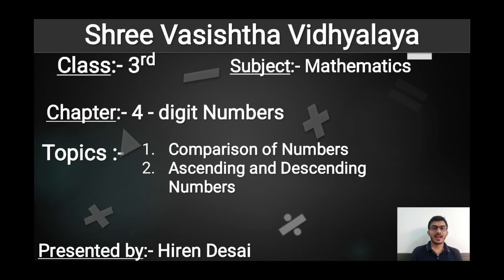Hello my dear children, I am Srivastava Jalai. I hope you all are doing well and safe at your home. Today I am here with a new topic of mathematics for class third. Our chapter name is 'Four Digit Numbers.' Today we are going to discuss two topics: first, comparison of numbers, and second, how to arrange numbers in ascending order and descending order. So let us start the first topic.